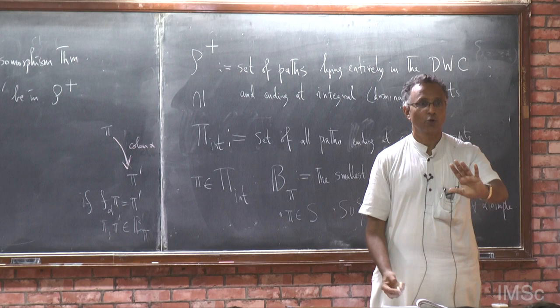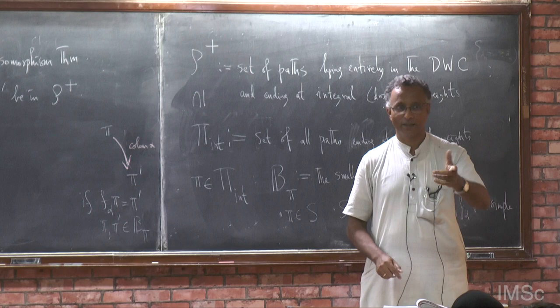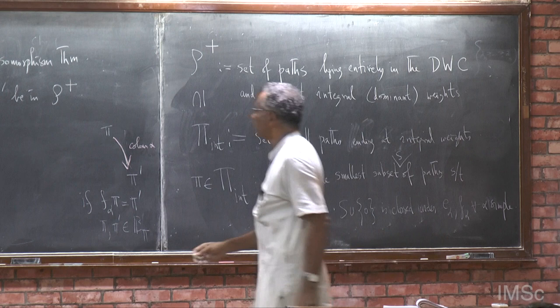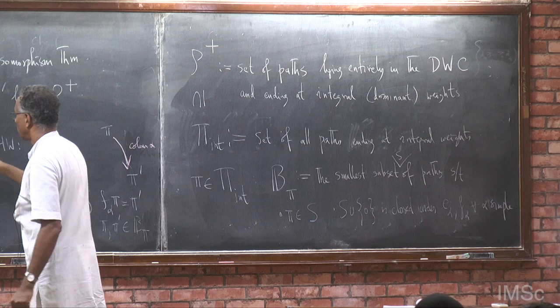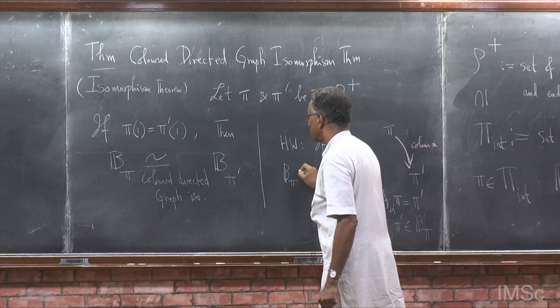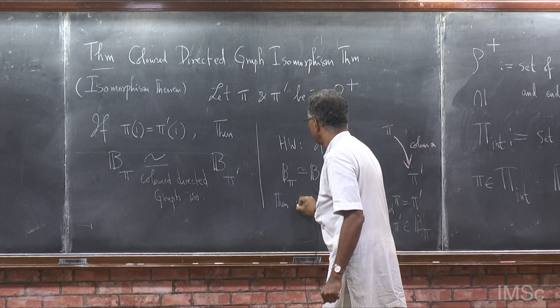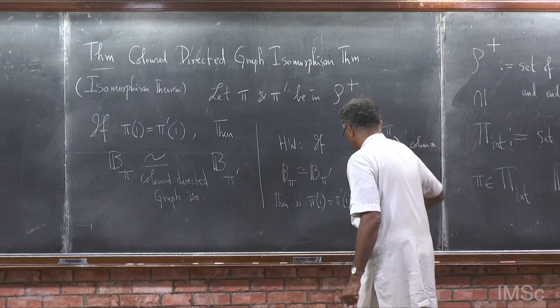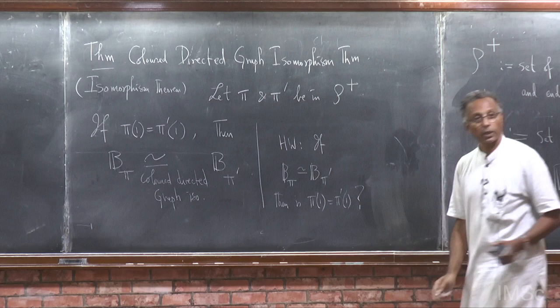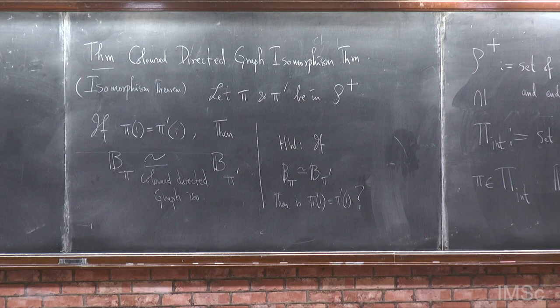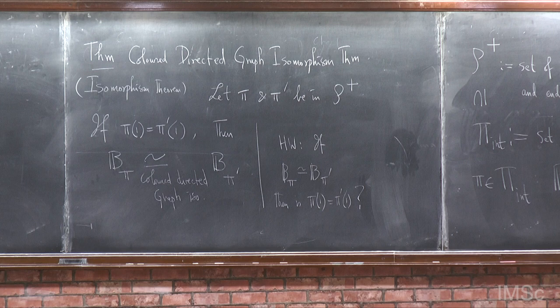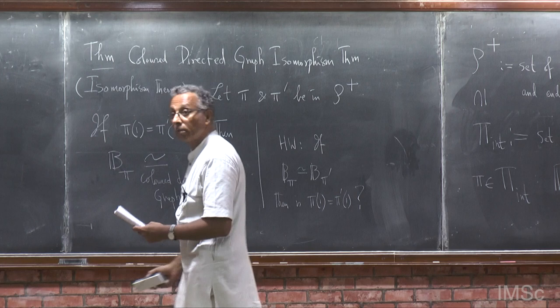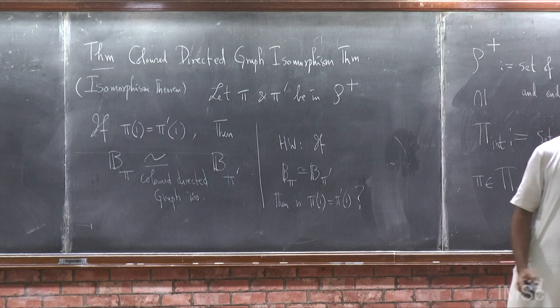Good question. If B(pi) equals B(pi prime) as colored graphs, is it true that pi_1 equals pi prime_1? I will let you think about it. Homework: if B(pi) is isomorphic to B(pi prime) as colored graphs, then pi_1(1) equals pi prime_1(1). This may be a good thing to think about if you want to understand Kac-Moody Lie algebras, even the affine ones.